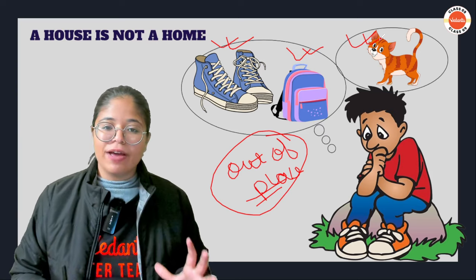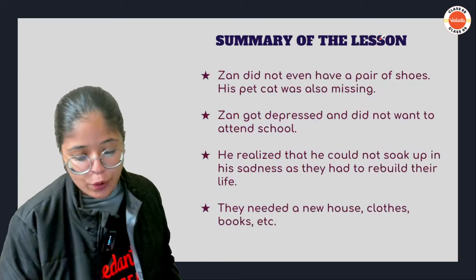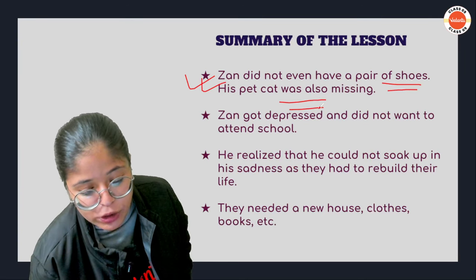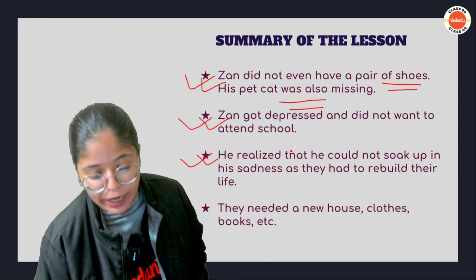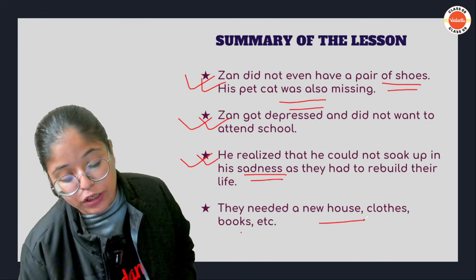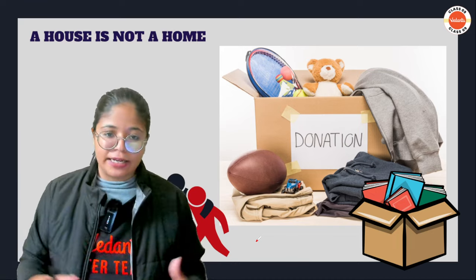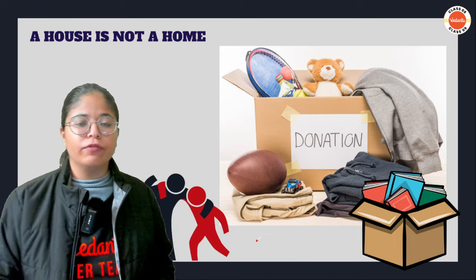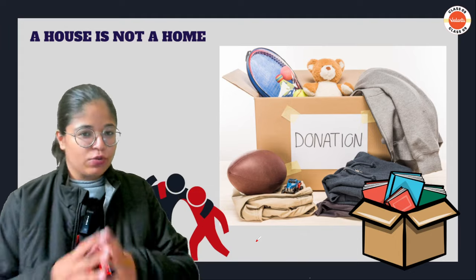Zain feels like he doesn't belong — 'I don't know what will happen to me.' He has no shoes, his cat is gone, he is depressed. His mom sends him to school and he sits there very sad. Then suddenly he has a PT period, and as he walks toward the auditorium, his classmates start acting in a very weird way.